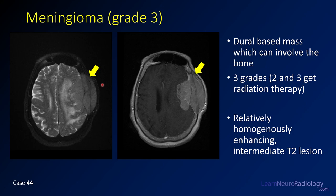This case also has other classic features of meningioma. There's a T2 hyperintense radiating structure that's pretty common in meningioma, and a pedicle where vessels are radiating out in a star-shaped pattern — also classic for a meningioma.